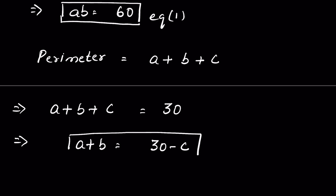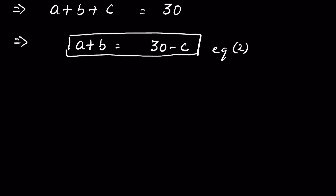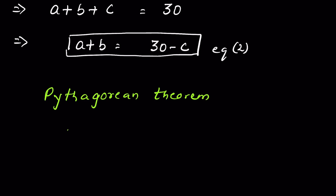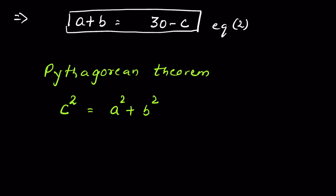Again, since this is a right angle triangle, as per the Pythagorean theorem, the square of the hypotenuse — hypotenuse here is c — is equal to the sum of squares of the two opposite sides. So c squared is equal to a squared plus b squared. We will remember this as equation three.